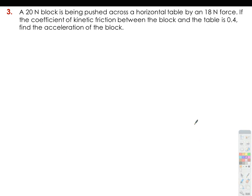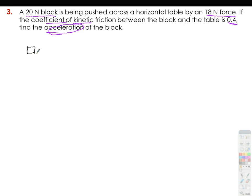Number three: a 20 newton block is being pushed across a horizontal table by an 80 newton force. If the coefficient of kinetic friction between the block and the table is 0.4, find the acceleration of the block. Draw a free body diagram to visualize what is happening. There is a force applied of 18 newtons, and the block is 20 newtons — so your weight is 20 newtons. You will have a normal force, and since it's not going up or down, your normal force and weight are the same: 20 newtons. You'll also have a kinetic force of friction because it is moving.